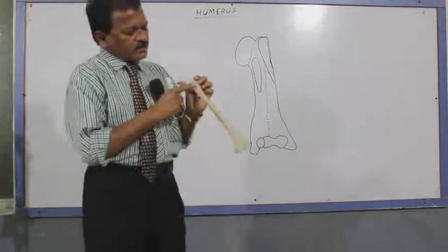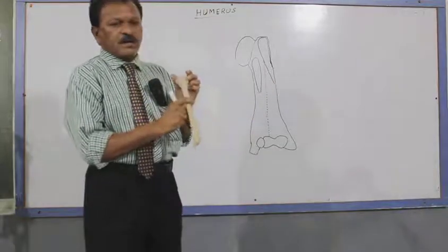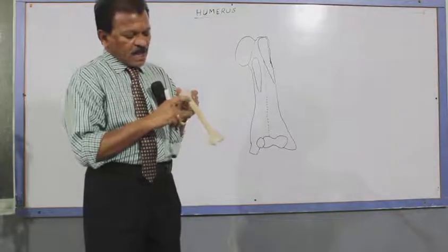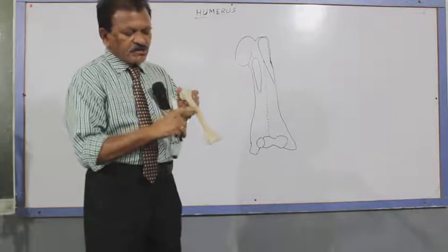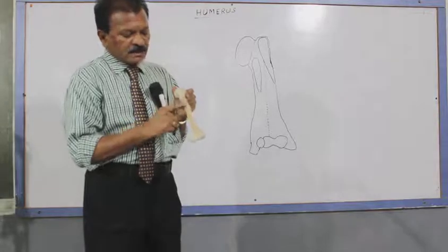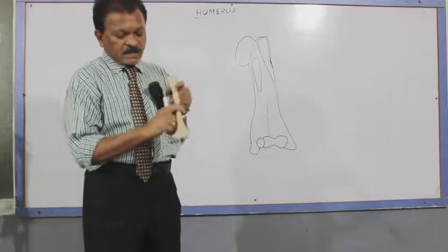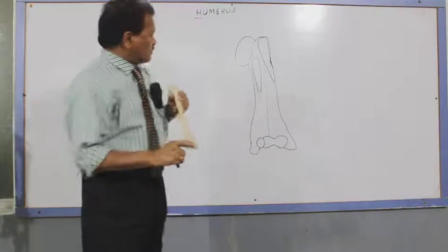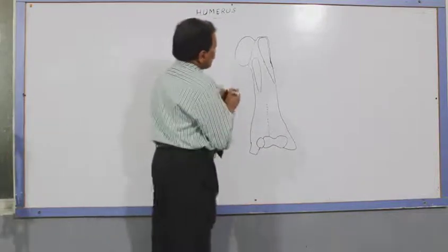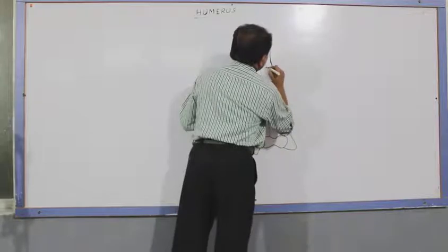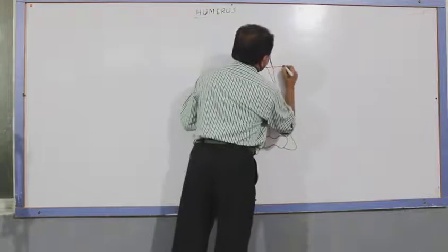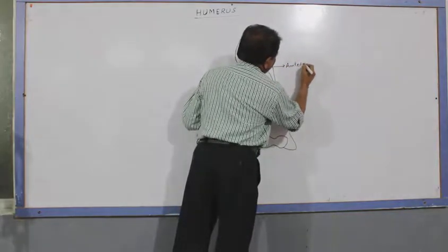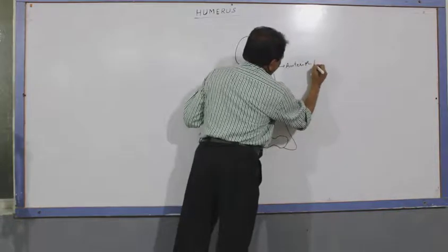The anterior border begins at the lower aspect of the greater tubercle of the humerus and descends downwards. In the middle, it is prominent and extends up to the lower end. This is the anterior border.